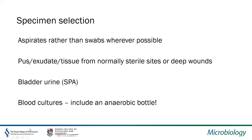Specimen selection is critically important if you're going to culture these organisms. Aspirates are much better than swabs wherever possible. Pus, exudates, or tissue from normally sterile sites or deep wounds are preferred. Bladder urine is much better than voided samples. Always include an anaerobic blood culture bottle — there's plenty of literature evidence that you would miss key anaerobic pathogens without one. Anaerobic bottles contain components like hemin that are critical for growth of anaerobic bacteria.